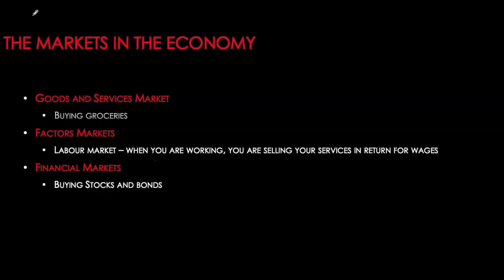The goods and services market is where final goods are traded. Final goods are those purchased by the end consumer. For example, if I'm a baker buying a bag of flour, that flour is not a final good — the cupcakes or cakes I produce and sell to consumers are the final goods. However, if you buy flour for personal use at home, that bag of flour is a final good. In the goods and services market, we only look at final goods, not raw materials or inputs that go into the production process.